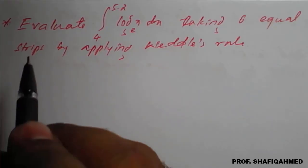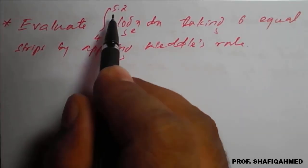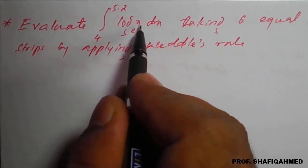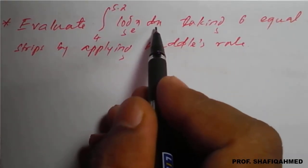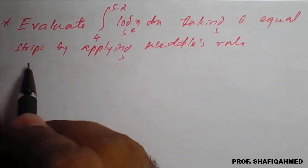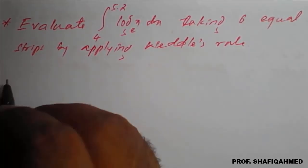The problem is: evaluate the integration from 4 to 5.2 of log x to the base e dx, taking 6 equal strips by applying Weddle's rule.